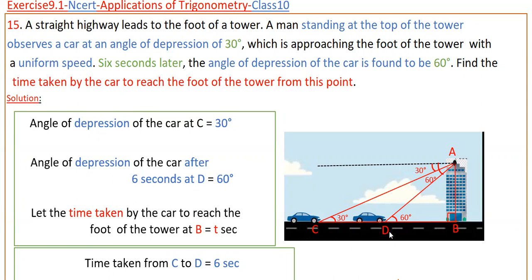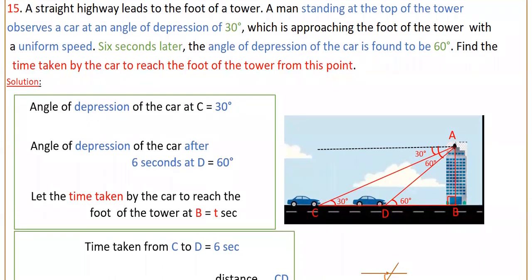We have to find the time taken from this point to reach the foot of the tower. The time taken from point C to point D is given as 6 seconds, and the car is going with a uniform speed. Let the time taken from point D to the foot of the tower B be t seconds.